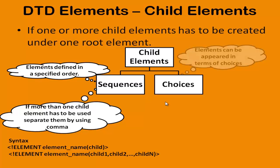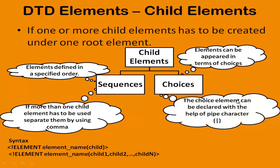The next option is choices. Choices means elements can appear in terms of choices — for a particular parent element we can provide two child elements but we can use only one of them in our program; we cannot use both. To create a child element with the choice option, it has to be declared with the pipe character. The syntax is: element keyword, element name, then child one pipe character child two — either you can use child one or child two, but not both at the same time.